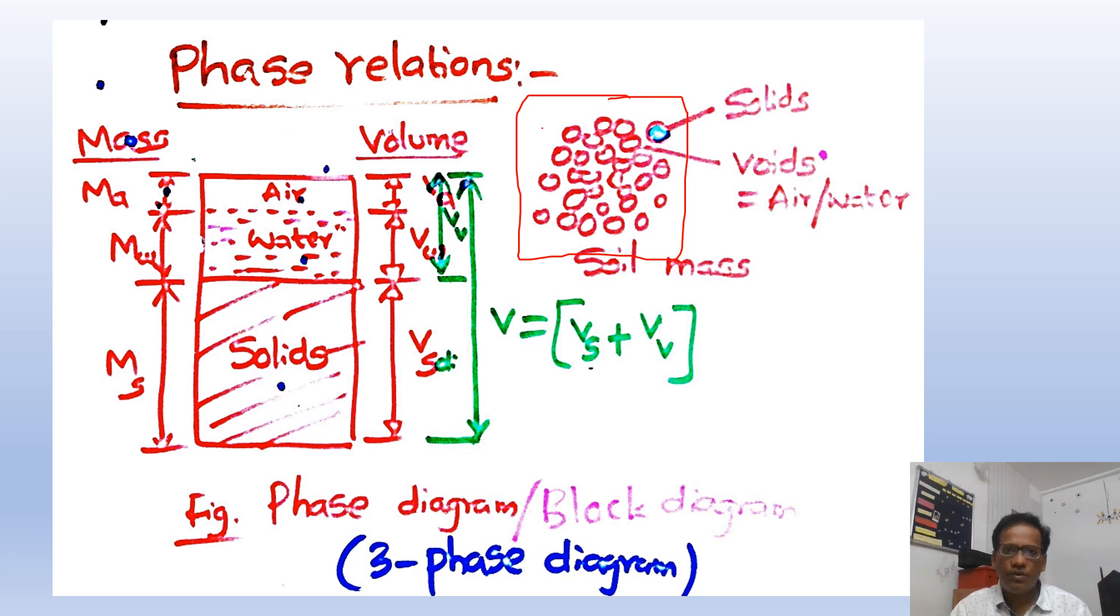Within the solids we can see voids, also called pores. We can expect either air or water present in these voids. Now we can clearly say that soil mass basically consists of solids and voids. This is the true picture of the soil mass.